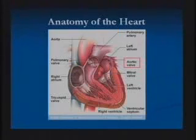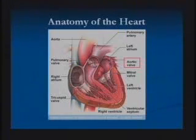Aortic stenosis is a valve problem. It makes sense to talk about what heart valves are and what they do in the heart. I have a graphic to show that may help explain this — it details the anatomy of the heart. The heart is made up of four chambers: upper chambers called atria and lower chambers called ventricles. There are valves between those chambers that act as doorways to regulate blood flow through them.